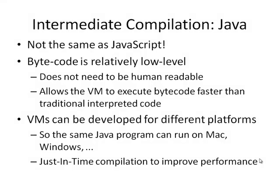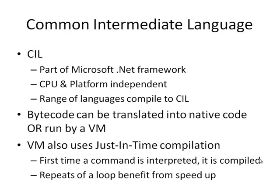Note that Java and JavaScript are not the same. JavaScript is a scripting language that runs on a web server or in a web browser; Java is a programming language that gets compiled to bytecode for running in a virtual machine. The bytecode is relatively low-level and doesn't need to be human readable, meaning the interpreter for the virtual machine can execute bytecode faster than traditional interpreted code. Virtual machines can be developed for different platforms so one Java program can run on a Mac, Windows, Unix, and a range of different machines. They can also use just-in-time compilation, which allows the processor to convert a command to machine code the first time it's interpreted and remember that result, so inside a loop we don't have to continually repeat the interpretation process.